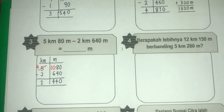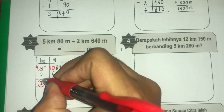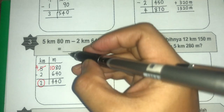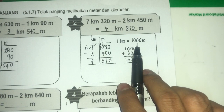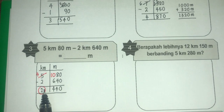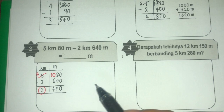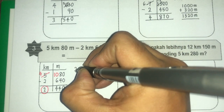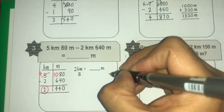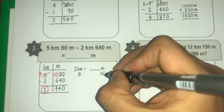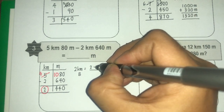Soalan ni kata nak jawapan dalam meter sahaja. Yang ni unit kilometer, kita perlu tukar kepada meter. 1 kilometer sama dengan 1000 meter. Kalau awak pandai congak: kalau 2 kilometer, berapa meter? Jawapan dia adalah 2000 meter. Tapi kalau awak tak faham, kita buatlah penukaran unit BKKB — besar kepada kecil bermaksud darab. Darab 1000. Jadi 2 darab 1000 adalah 2000.